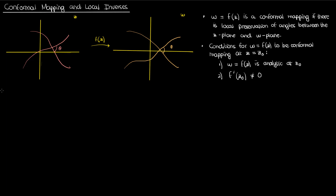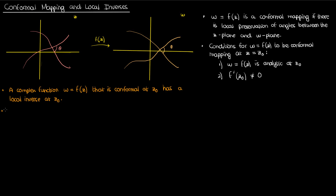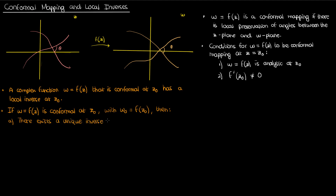What we're going to talk about in this video are local inverses. A complex function f of z that is conformal at z-naught automatically has a local inverse at z-naught. What this means is that if I've got a transformation that takes me from the z-plane to the w-plane given by w equals f of z, with f of z-naught equal to w-naught, then this transformation has a unique inverse transformation that takes me back from the w-plane back to the z-plane.